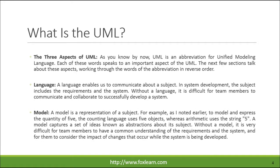The three aspects of UML: UML is an abbreviation for Unified Modeling Language. Each of these words speaks to an important aspect of the UML. Language — a language enables us to communicate about a subject. In system development, the subject includes the requirements and the system. Without a language, it is difficult for team members to communicate and collaborate to successfully develop a system.